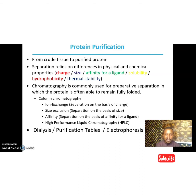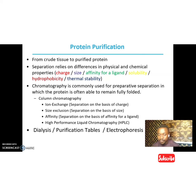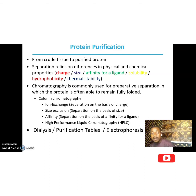We have ion exchange chromatography, where separation is based on charge — whether positive or negative. This type of chromatography is divided into two: the cation exchanger and the anion exchanger, depending on which exchanger you use for protein separation. We also have size exclusion chromatography, based on molecular weight and size. There is also affinity chromatography, based on the affinity of a protein or enzyme for a particular ligand. We also have high performance liquid chromatography, dialysis, and electrophoresis.